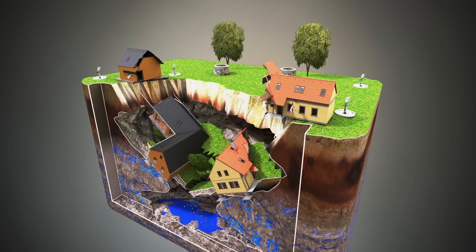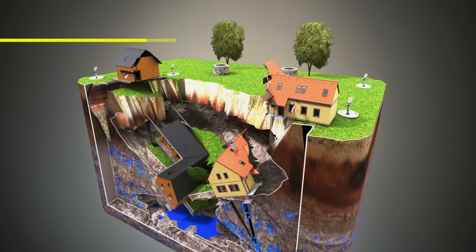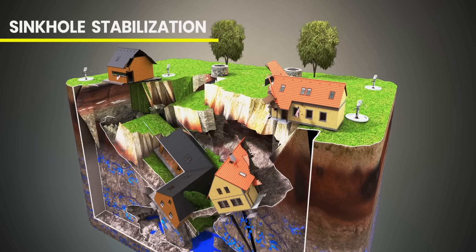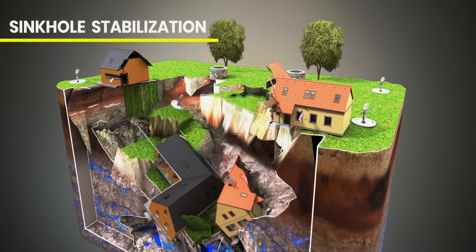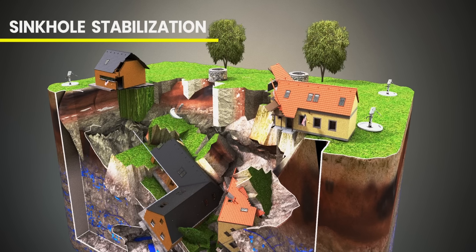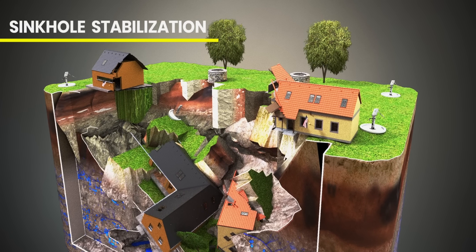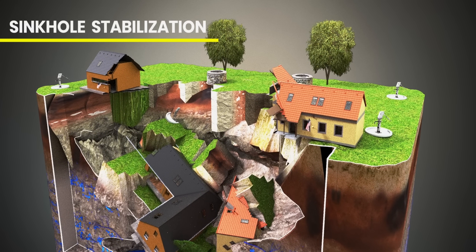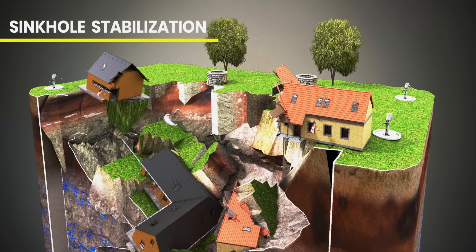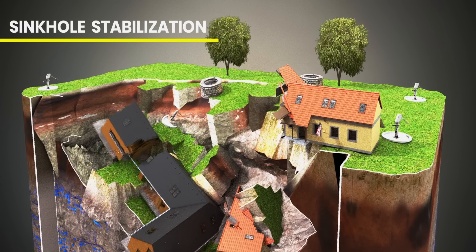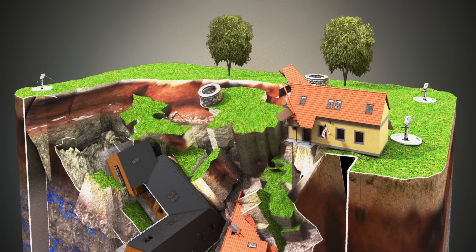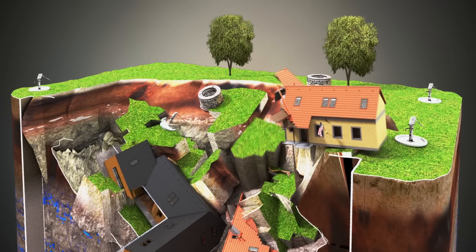It is very common for sinkholes to continue getting bigger after the initial collapse. The initial event is often just the first and most dramatic step in a longer process of stabilization. The growth can happen in two ways: through further rapid collapses or through slower gradual erosion.